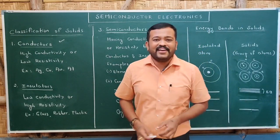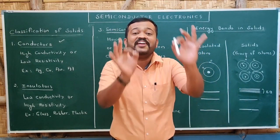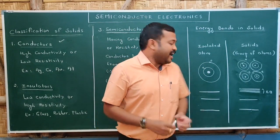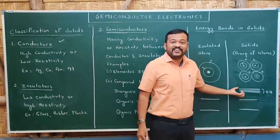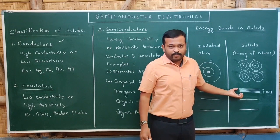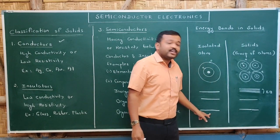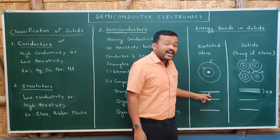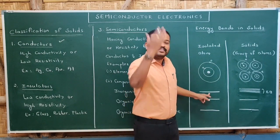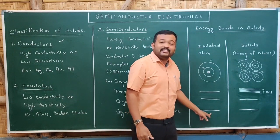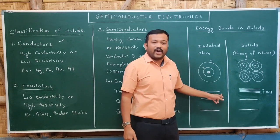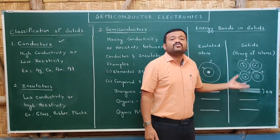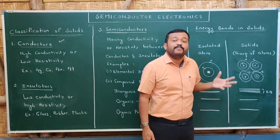What is an energy band? An energy band is a closely spaced group of energy levels. Usually, we speak about the valence energy level, and it splits into a number of energy levels based upon the number of atoms present.